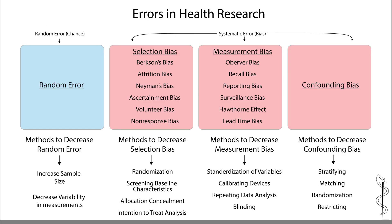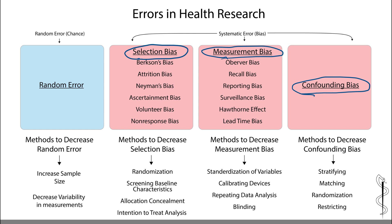I already introduced you to this slide in Chapter 5, but I want to bring it up again because it is extremely useful to remember all the kinds of bias in research by grouping them into three major groups. All the different kinds of bias — such as Berkson bias, attrition bias, recall bias, reporting bias, non-response bias, volunteer bias, etc. — can be grouped into three major groups: selection bias, measurement bias, and confounding bias. These terms refer to broad families of bias under which many specific types fall.